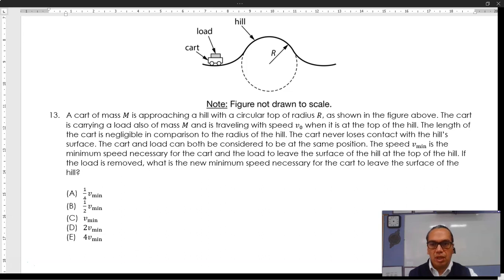The length of the cart is negligible in comparison to the radius of the hill. The cart never loses contact with the hill's surface. The cart and load can both be considered to be at the same position. The speed v minimum is the minimum speed necessary for the cart and the load to leave the surface of the hill at the top. If the load is removed, what is the new minimum speed necessary for the cart to leave the surface of the hill?